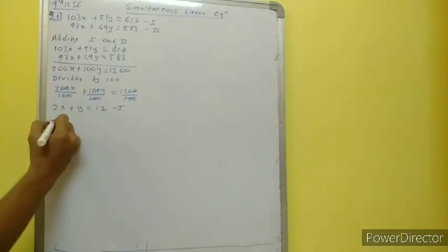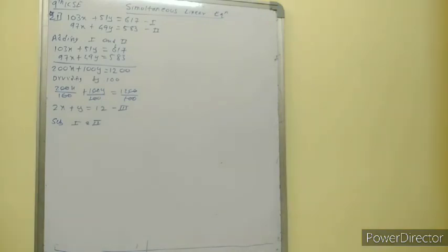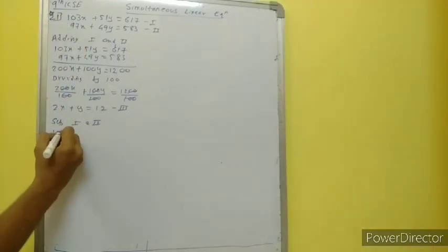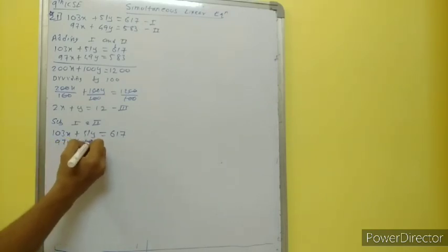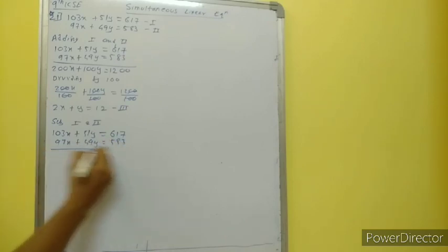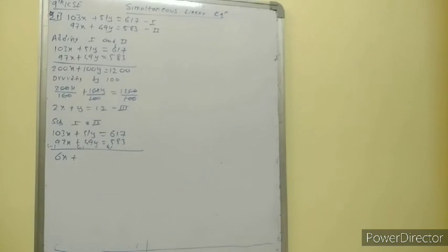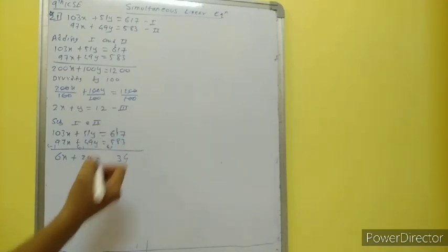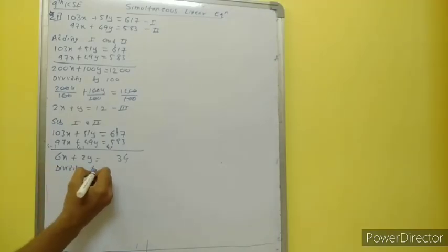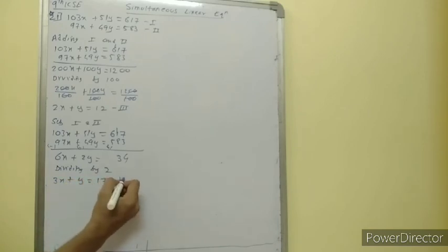Now I will try to subtract equations 1 and 2. We don't have the same sign — we are just subtracting to get an easier equation. After subtracting: 103x minus 97x gives 6x, 51y minus 49y gives 2y, and 617 minus 583 is 34. Dividing by 2: I have 3x plus y is equal to 17 — that is the 4th equation.